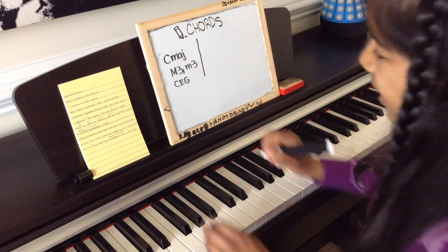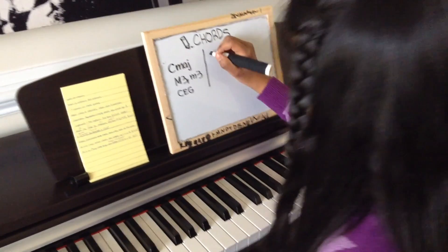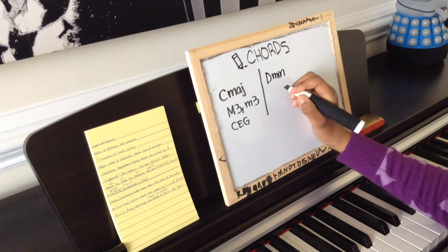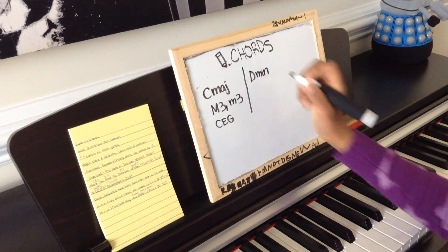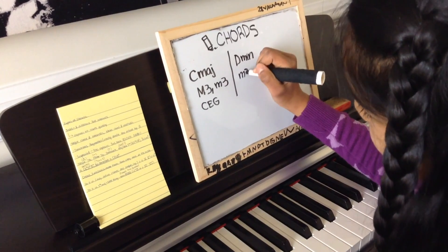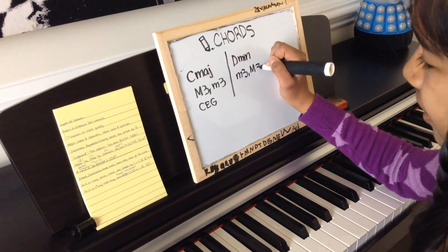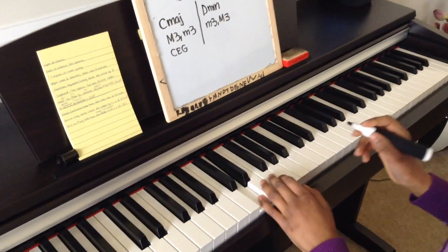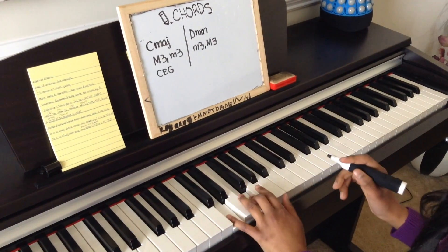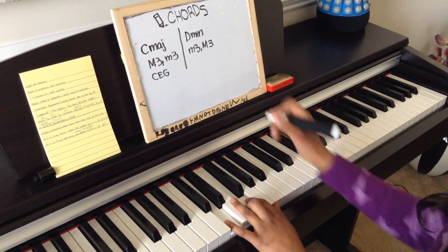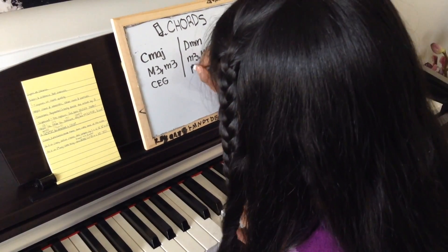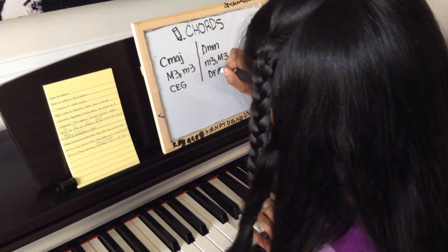Now let's move on to minor. Let's do D minor — the abbreviation is MIN. The formula is minor third, major third. You go from D up a minor third to F, and then a major third to A. So you have D, F, A.